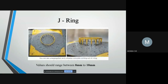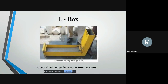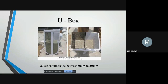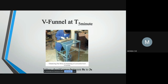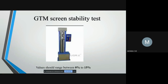This is the J ring apparatus and its typical value should range between 0 to 10 mm. This is an L box and its value should range between 0.8 mm to 1 mm. This is the picture of a U box and its value should range between 0 to 30 cm. This is the fill box apparatus and its value should range between 90% to 100%. This is the apparatus used to perform V funnel test at T5 minutes with value 0 to 3 seconds, and the GTM screen stability test value should range between 0 to 15%.